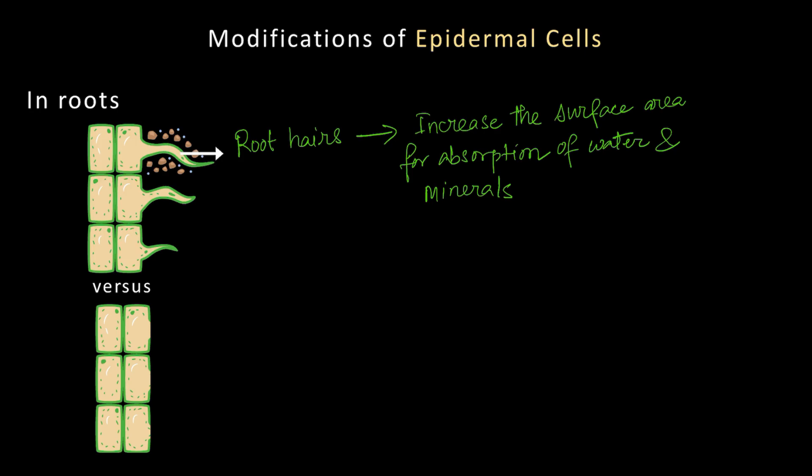If you compare smooth-sided epidermal cells versus ones with root hairs, the ones with root hairs have a higher surface area. The formation of these finger-like projections is a smart choice for the epidermal cells to increase the surface area of absorption.